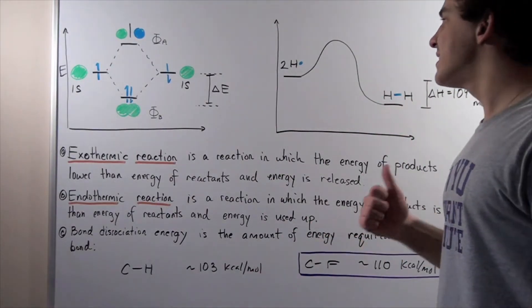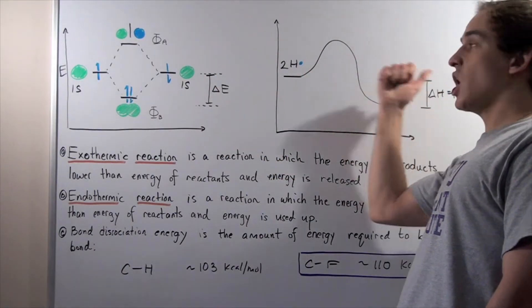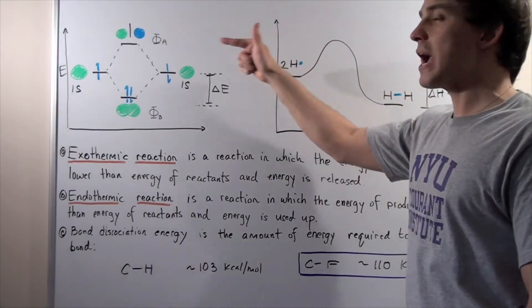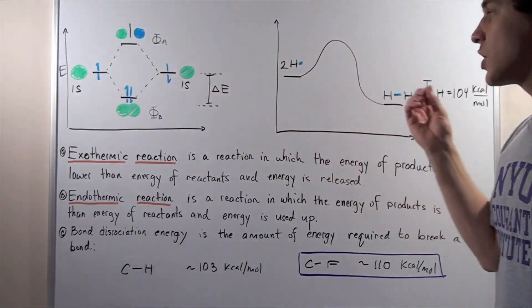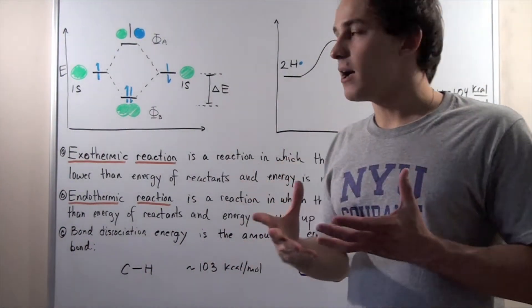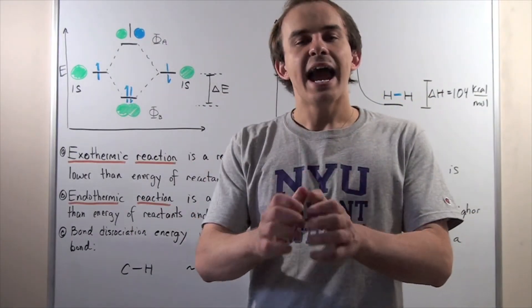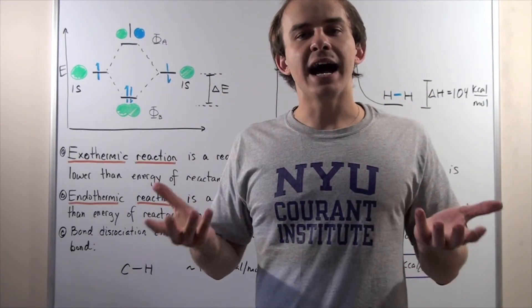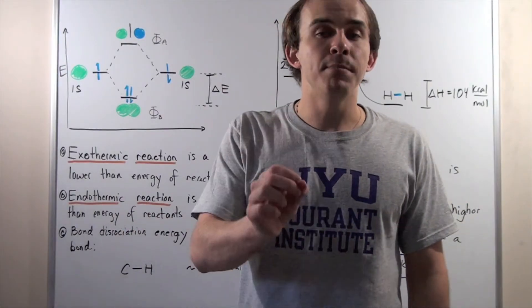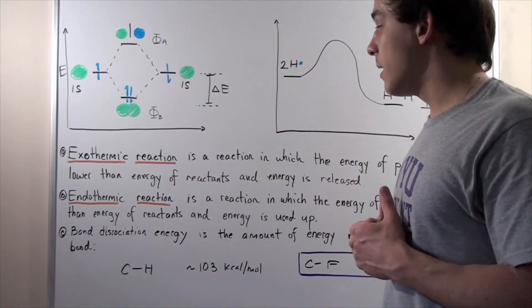Any time we have an exothermic reaction going in the forward direction, we have an endothermic reaction going in the backward or reverse direction. To sum this up: any time we form a bond, energy is released. Any time we want to break a bond, energy needs to be inputted into our system.